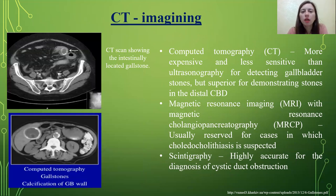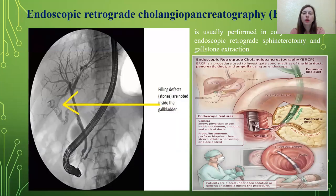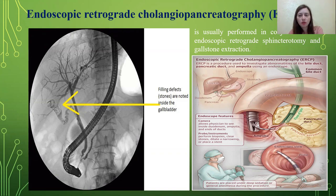CT imaging is more expensive and less sensitive than ultrasonography for detecting gallbladder stones, but superior for demonstrating stones in the distal common bile duct. Magnetic resonance imaging with magnetic resonance cholangiopancreatography (MRCP) is usually preferred for cholestasis in which choledocholithiasis is suspected. Scintigraphy (HIDA scan) is highly accurate for the diagnosis of cystic duct obstruction. Endoscopic retrograde cholangiopancreatography (ERCP) is also an available method.